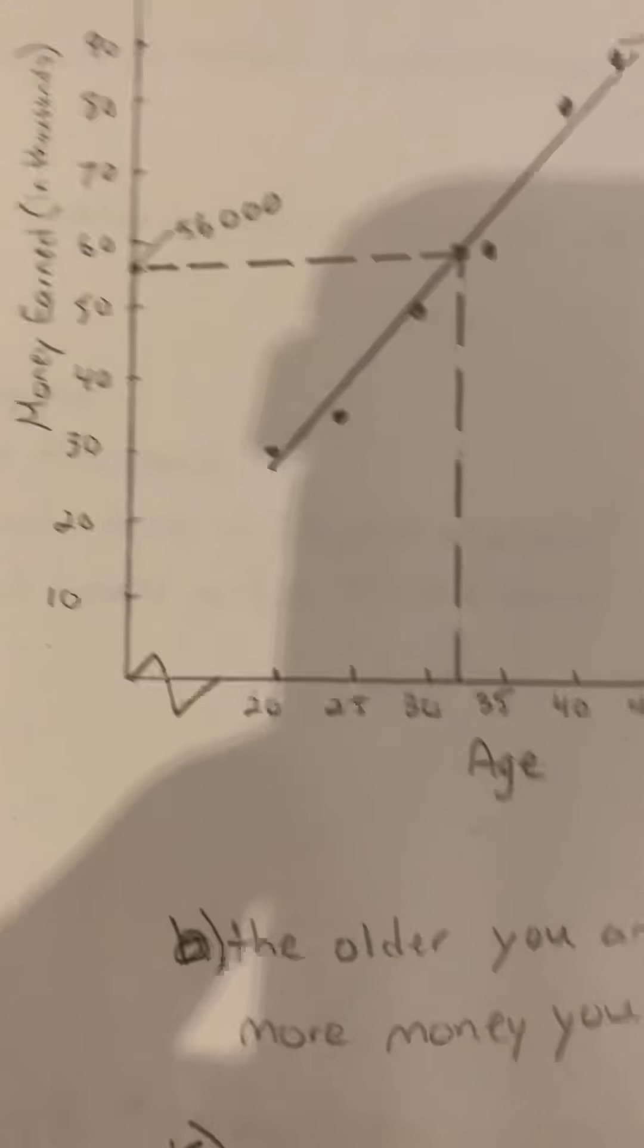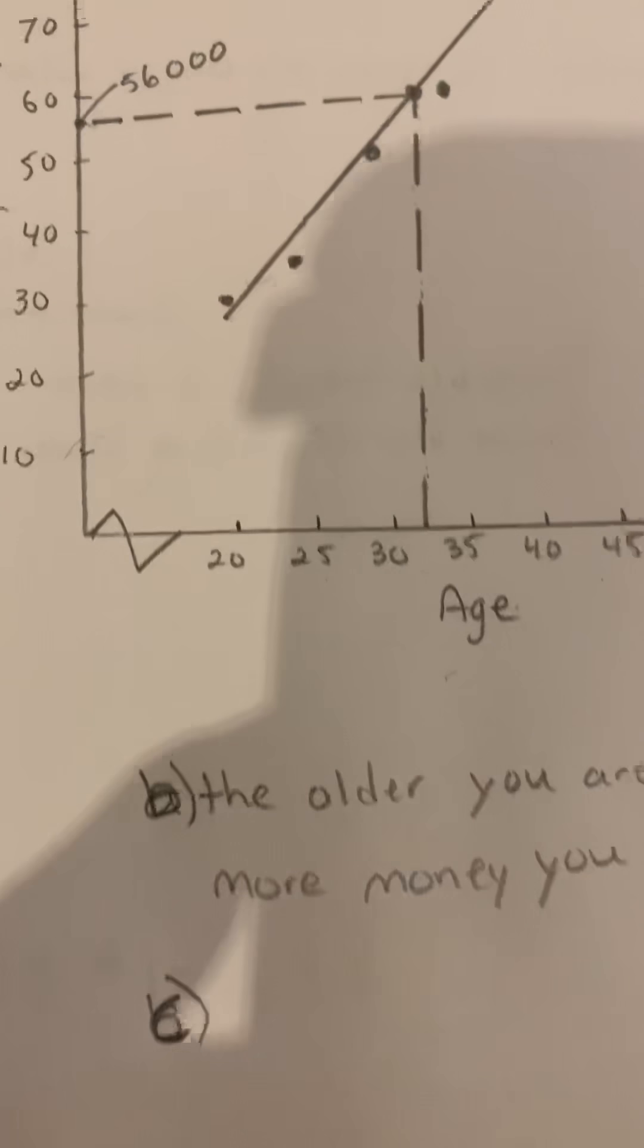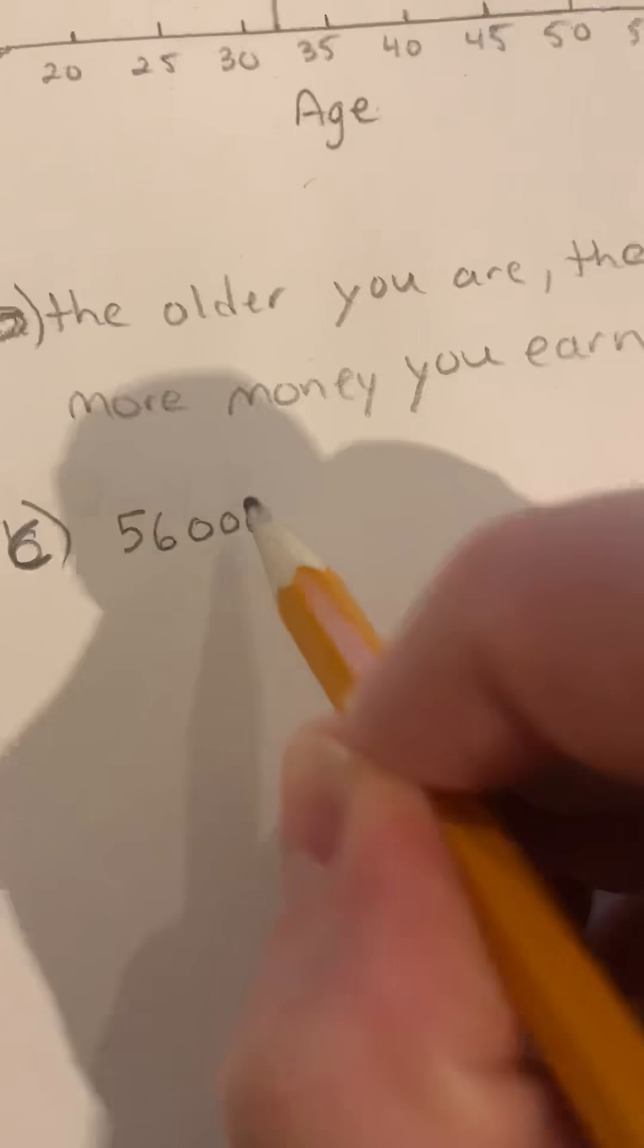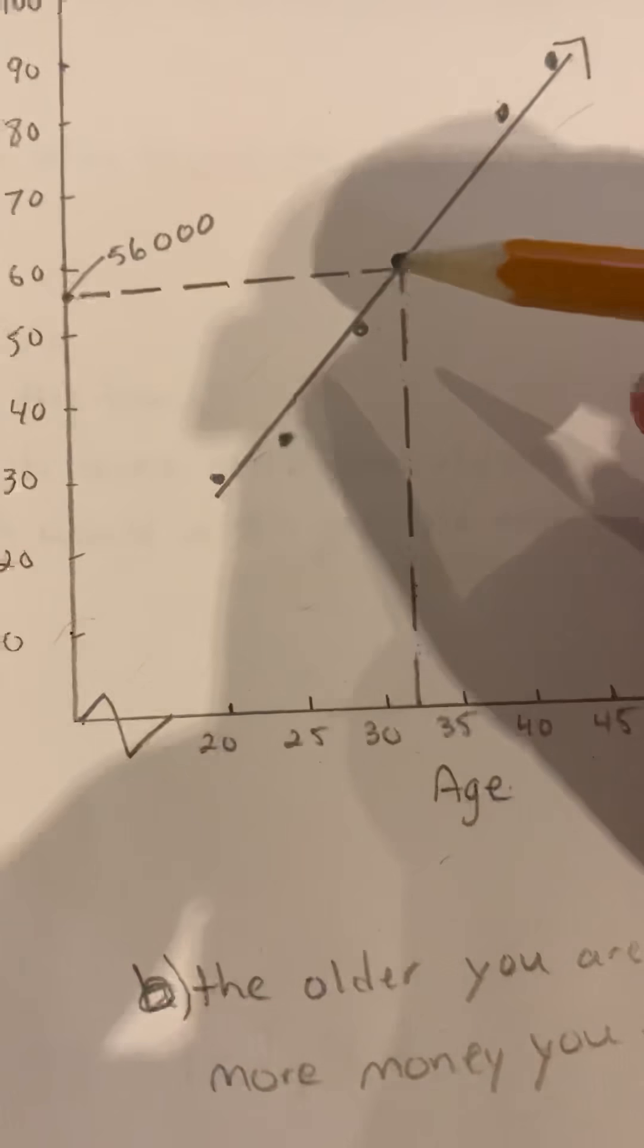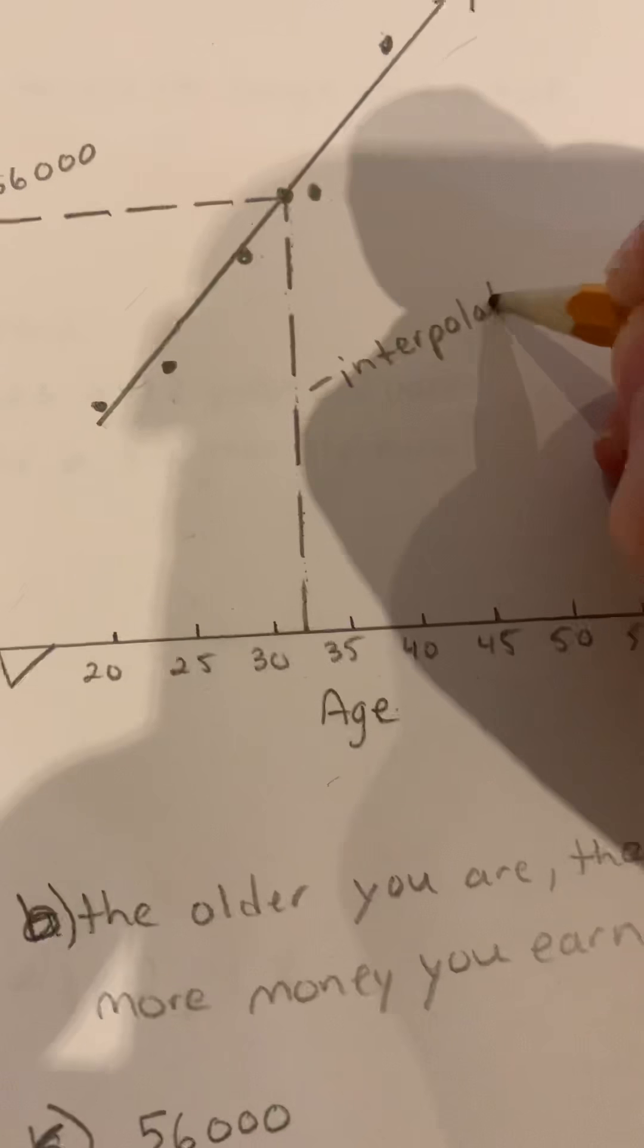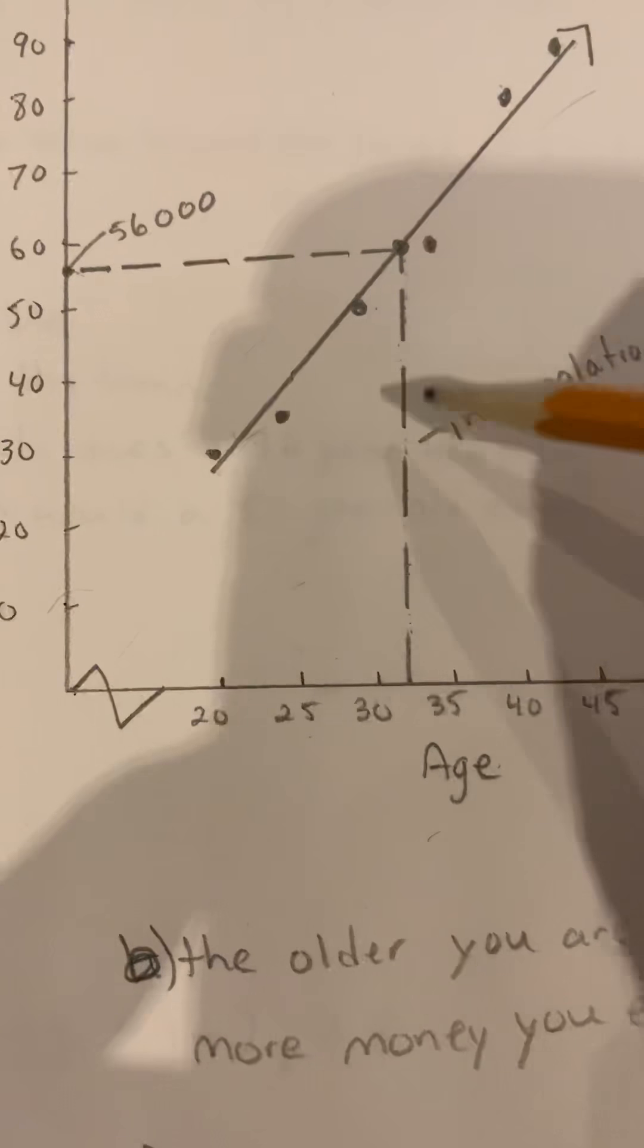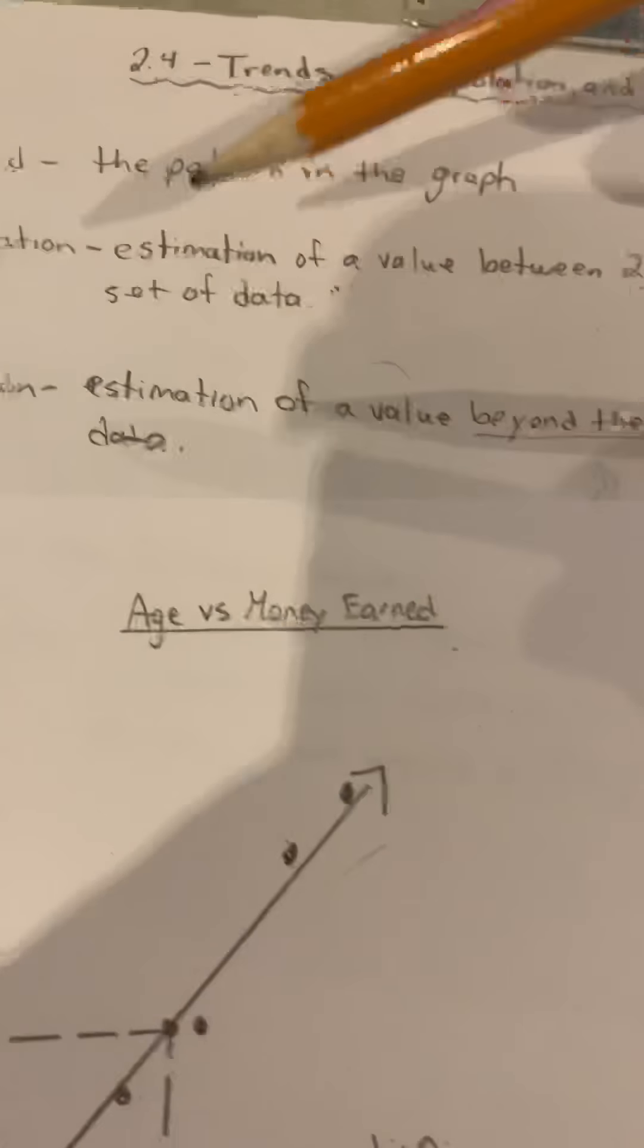For your graph it will be slightly different, might be a little bit lower, it might be a little bit higher, but that is fine. What we did here with the graph is called interpolation. We estimated the value within the data, within our points over here. Back to the definition, there's an estimation of a value between two measurements in a set of data. So we did that, it's our estimation between two points of data in our graph.